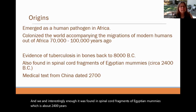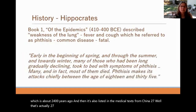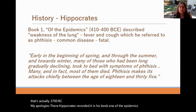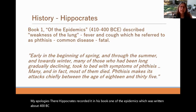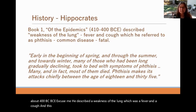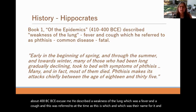It is also listed in medical texts from China around 2,700 BC. Hippocrates recorded it in one of his books called the Epidemics, written about 400 BCE. He described a weakness of the lung with fever and a cough, referring to it as Phthisis. That name stuck around for a while.